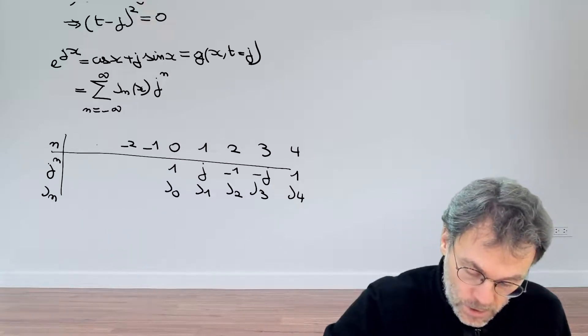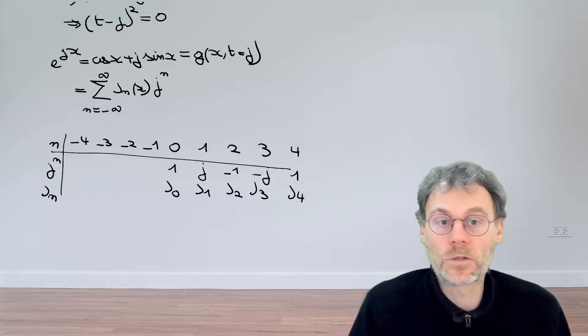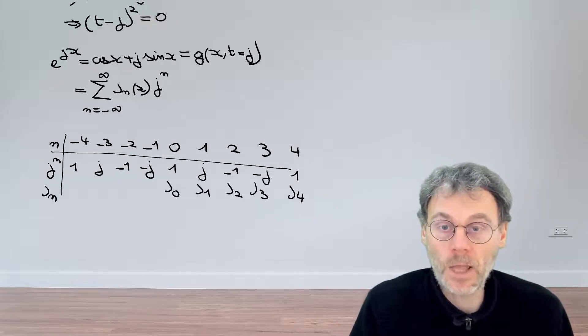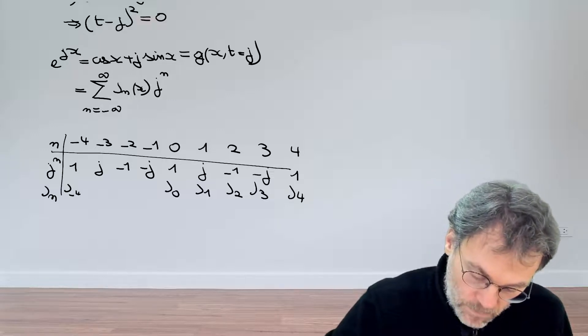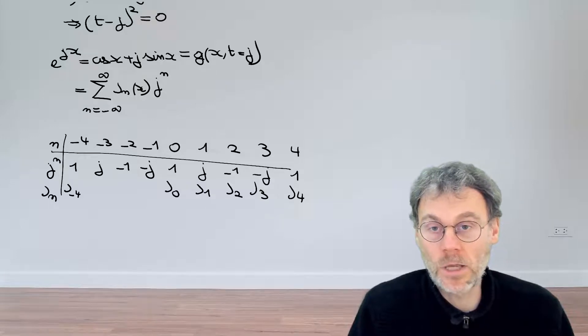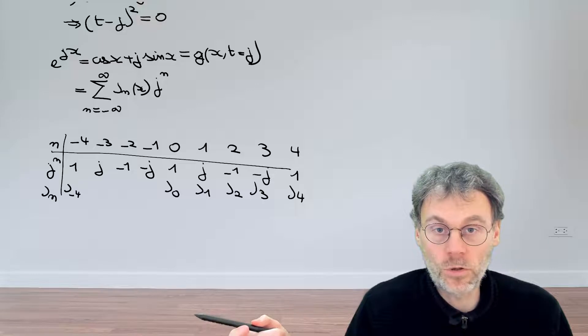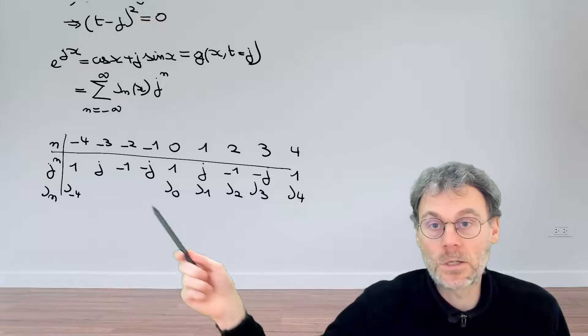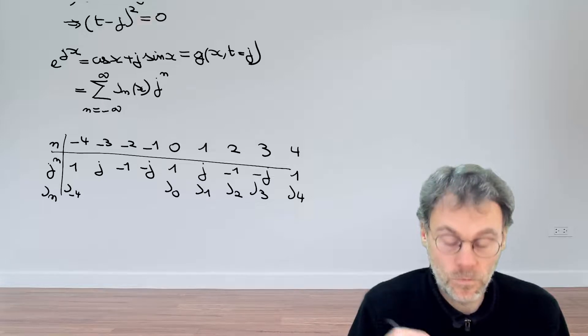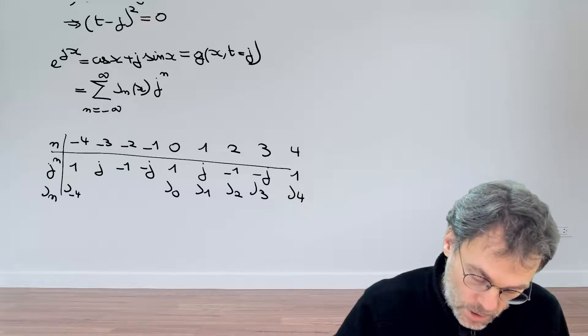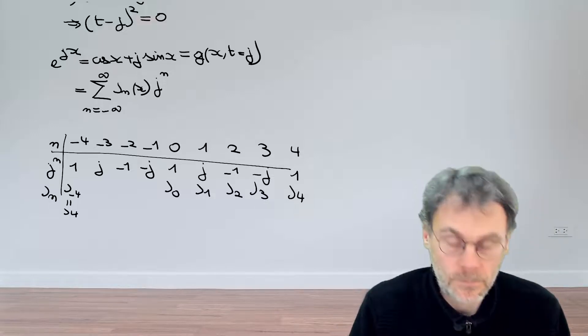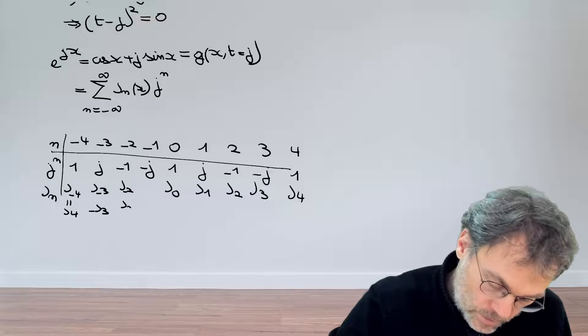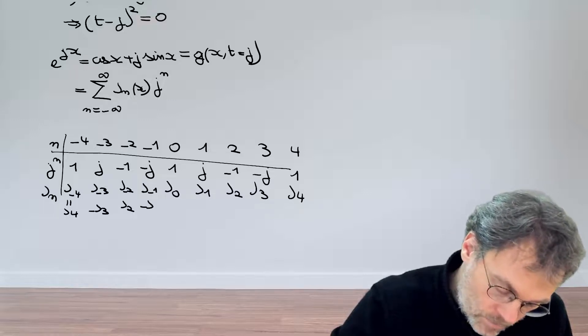If we now look at what happens for minus 1, minus 2, minus 3, and then minus 4, we have this repeating pattern 1, j, minus 1, minus j. For the Bessel functions, we have J_{-4}. But remember that we have this formula where a J of a negative order is equal to a J of a positive order, but multiplied by minus 1 to the power of that order. In this case, we have the order being equal to 4, so minus 1 to 4, that's giving us just 1. So J_{-4} is actually equal to J_4. It's different for J_{-3}, which will give us minus J_3, but then here we have J_{-2} giving us J_2, J_{-1} giving us minus J_1.